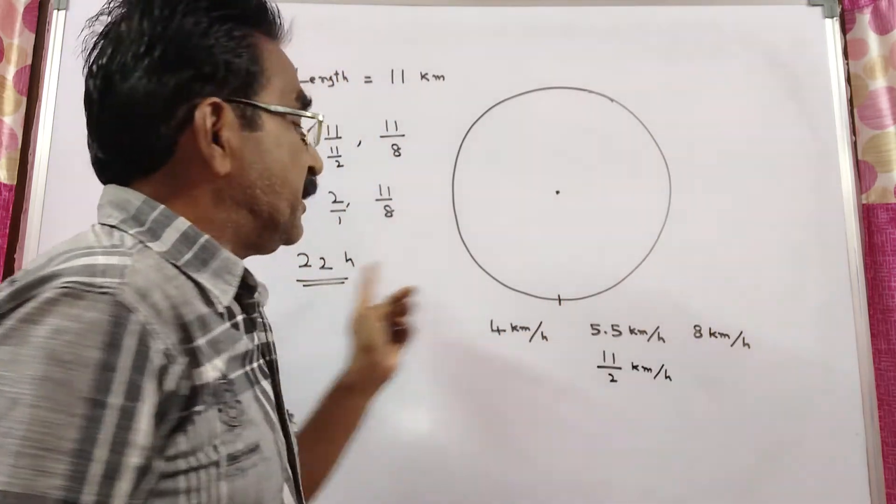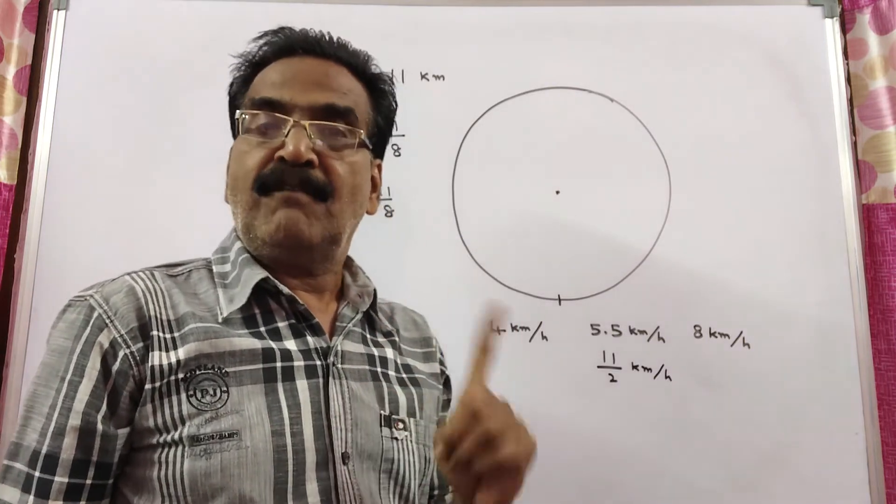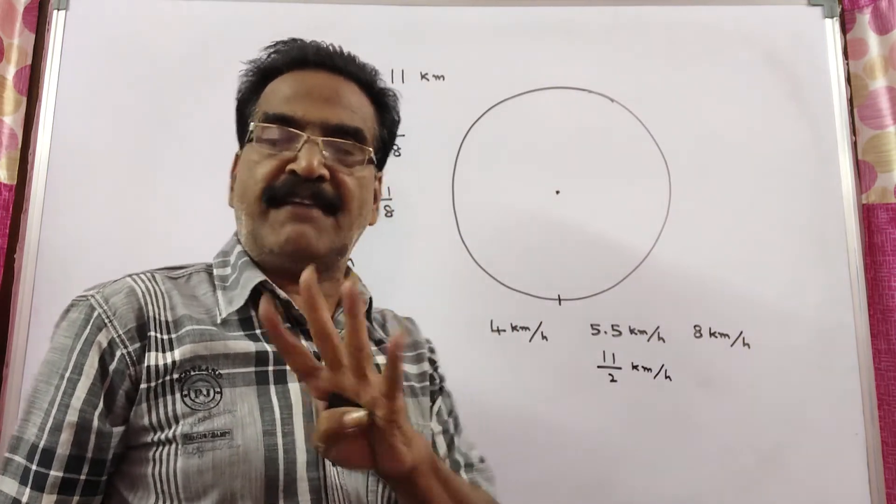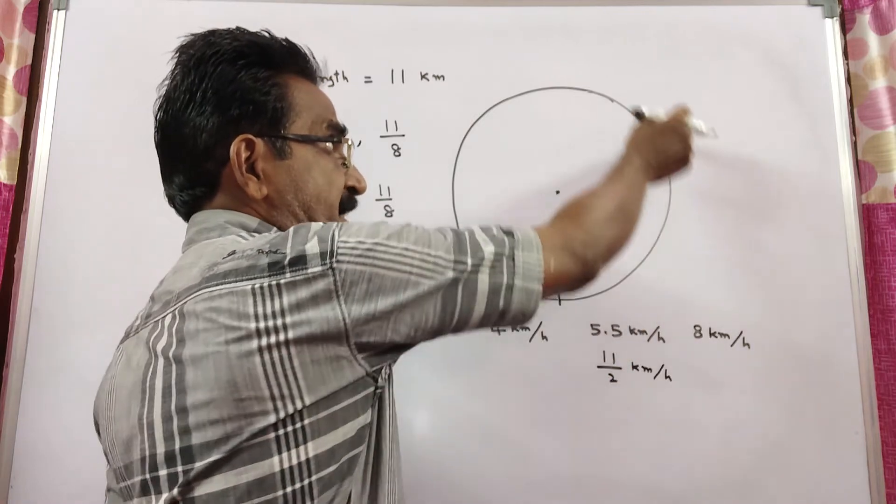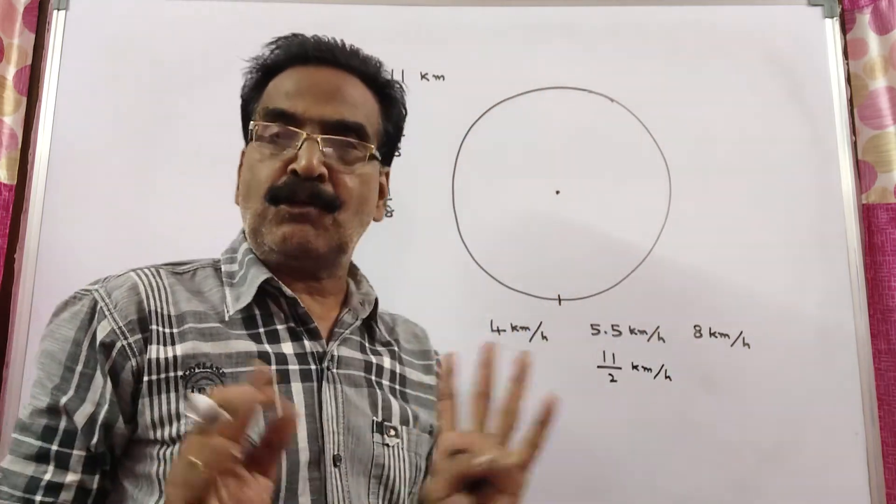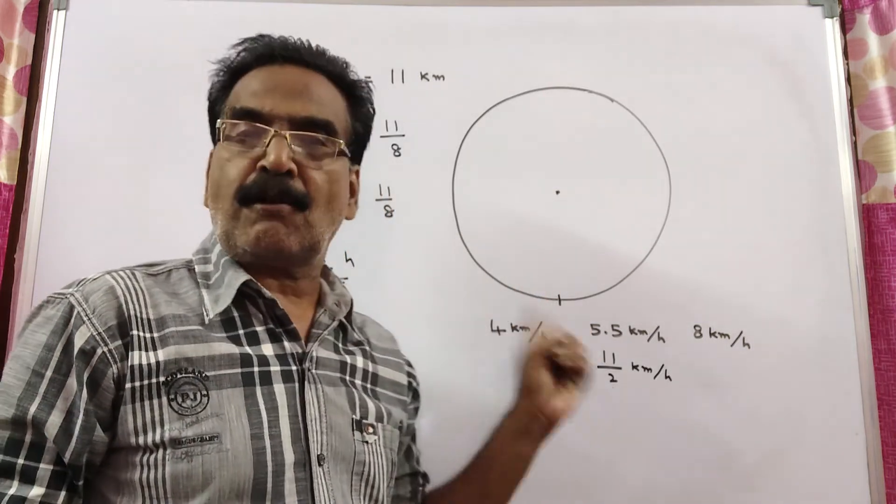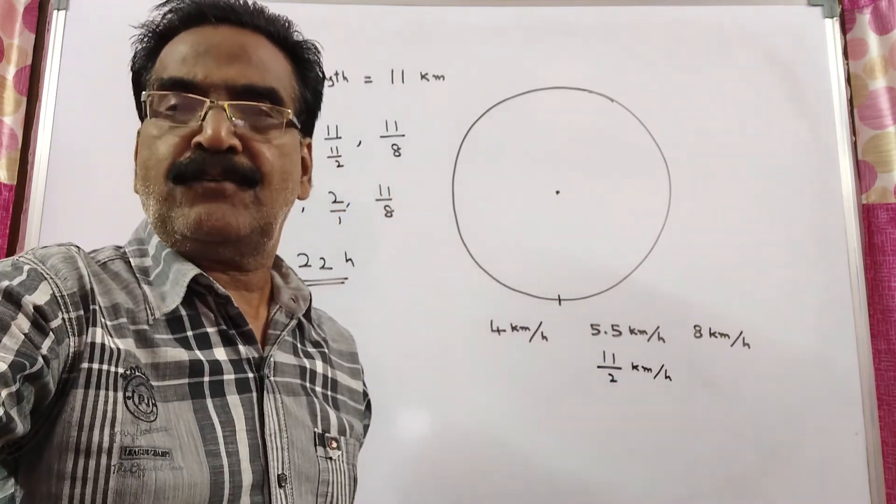The third man travels 176 kilometers, which is 16 × 11, completing 16 rounds. So after 22 hours, all three persons return to the starting point. Thank you friends, have a nice day.